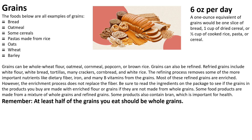You should be having about six ounces of grains per day. One ounce equivalent of grains would be one slice of bread, one cup of dried cereal, or half a cup of cooked rice, pasta, or cereal.